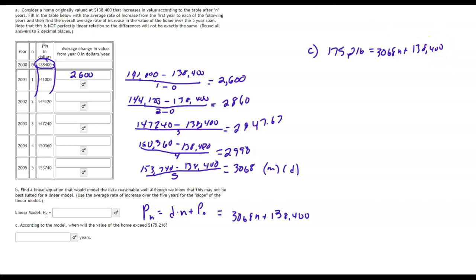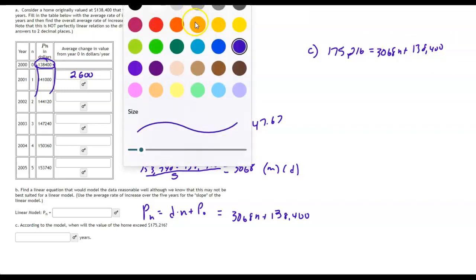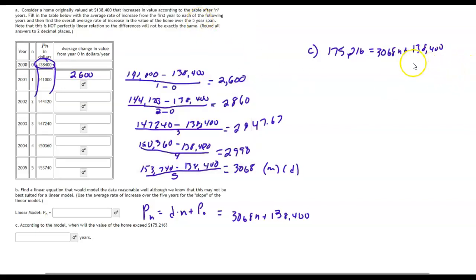So to solve that, we'll just come over here, let's change colors, and we'll subtract $138,400 from both sides of the equation. We'll get rid of that and subtract it from this side of the equation, minus $138,400.